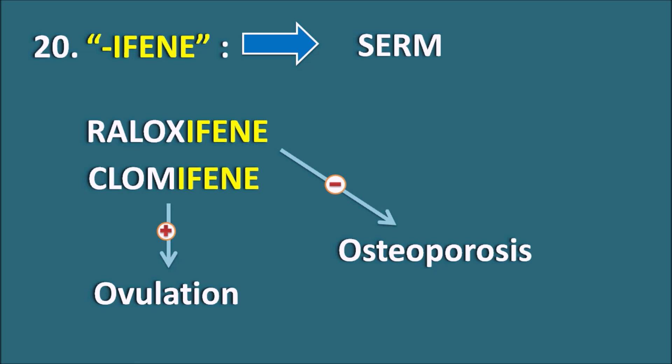We have another related drug, Tamoxifen, which has the suffix Iphene without the terminal letter E. Tamoxifen can be classified as an anti-estrogen — it has antagonistic activity but can also have agonistic activity on estrogen receptors. Since Tamoxifen has anti-estrogenic activity, it can be used in the treatment of breast cancer in both pre-menopausal and post-menopausal women.